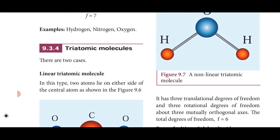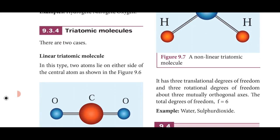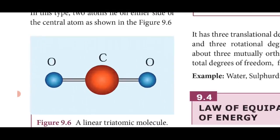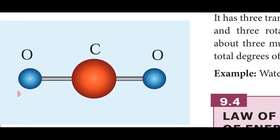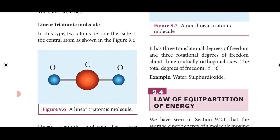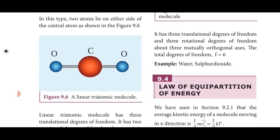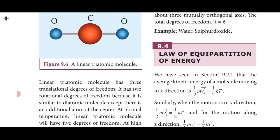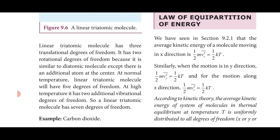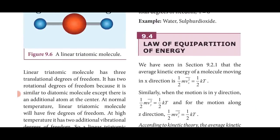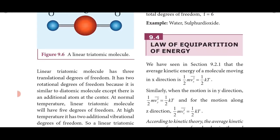For triatomic molecules there are two types: linear triatomic and non-linear triatomic. In a linear triatomic molecule, two atoms lie on either side of a central atom in a straight line — like CO₂. Rotation is only possible about two axes, giving two rotational degrees of freedom plus three translational.